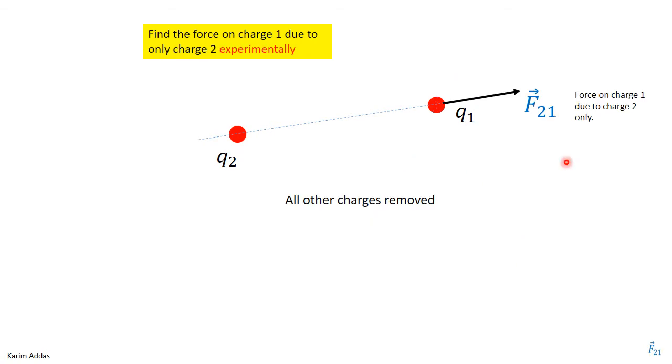So let's try and think about this experimentally. Experimentally, you can remove all the other charges and keep charge two only and get the force on one due to two only. And you'll get some vector. So this can be done experimentally.